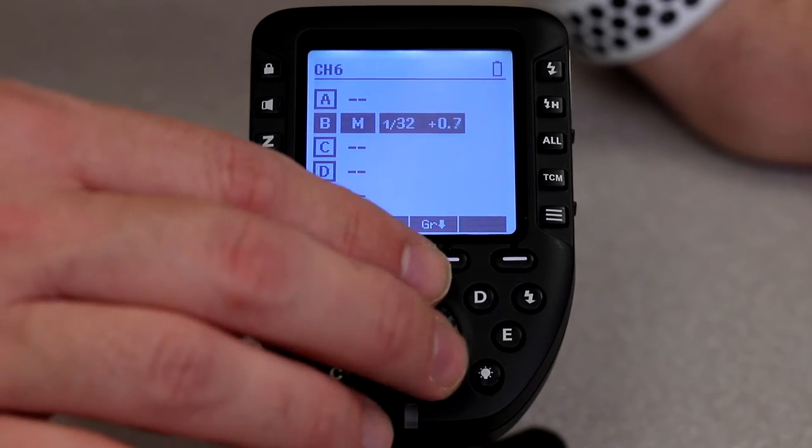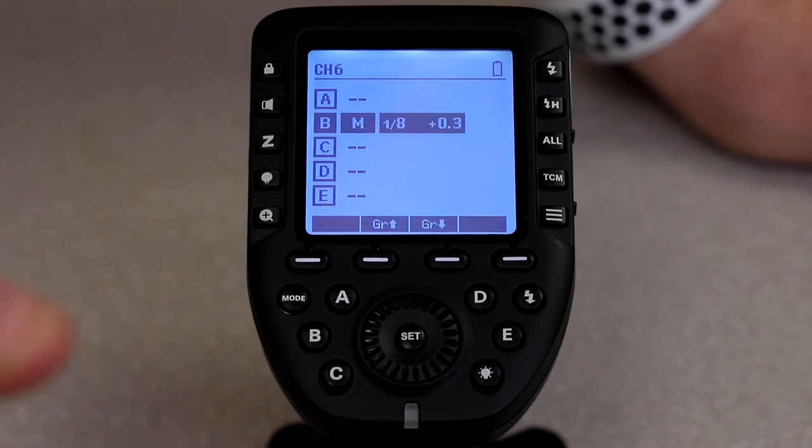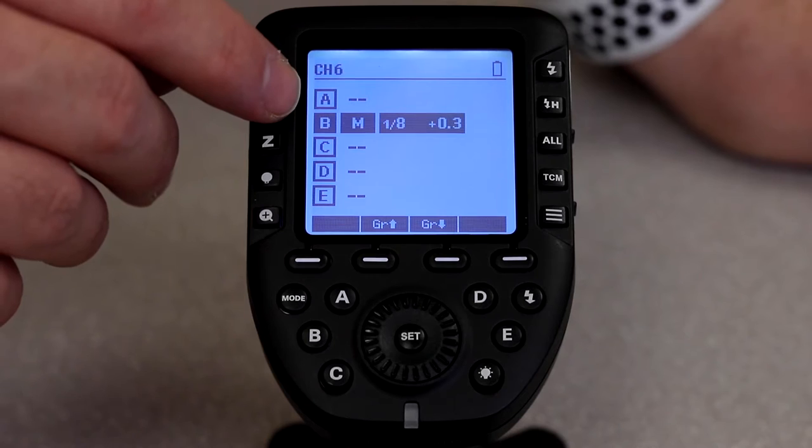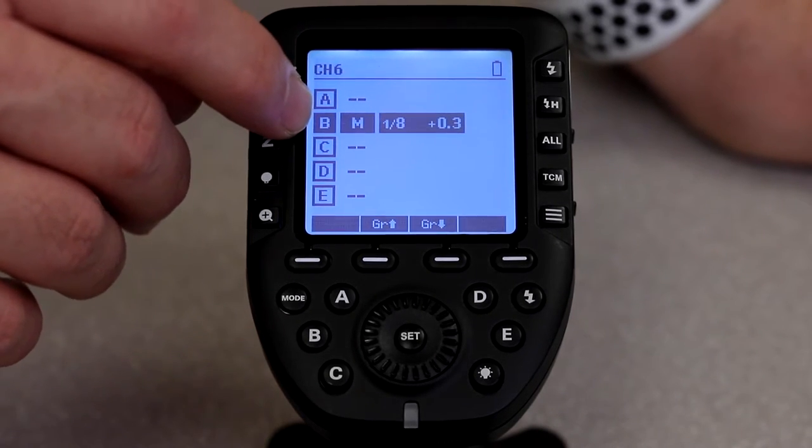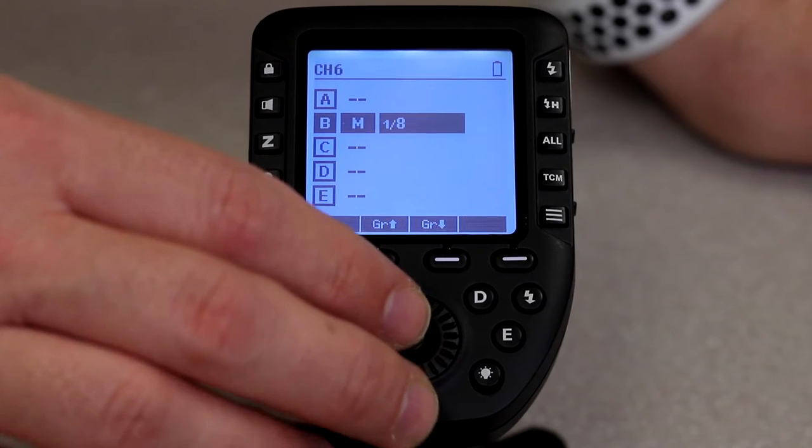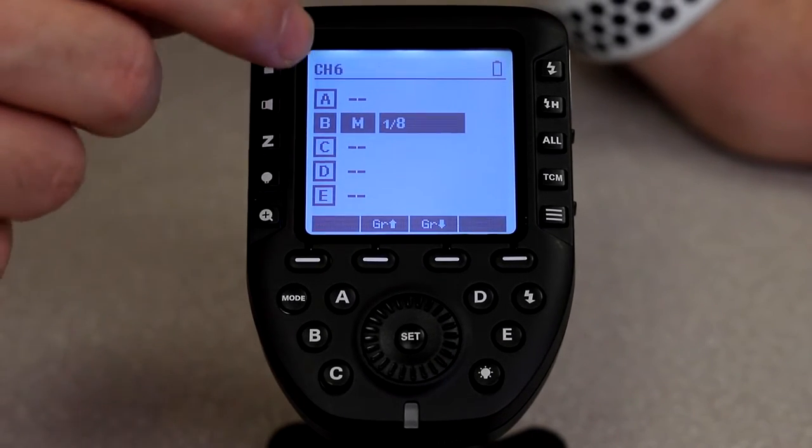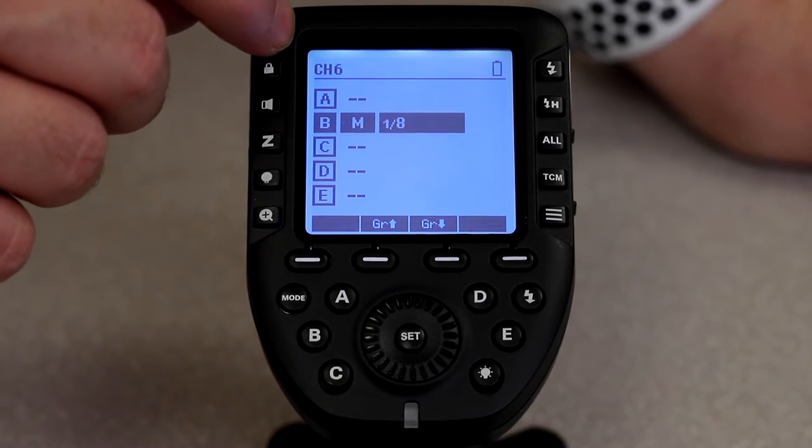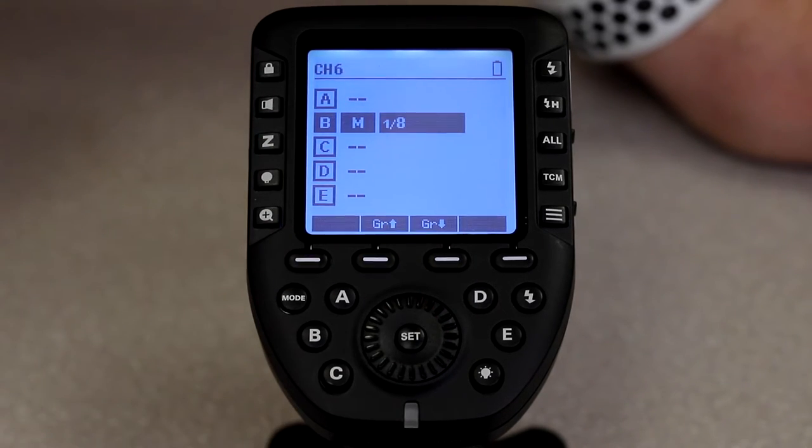So now let's just say that you have two lights set up. You've got a main light that's on group A and you have a hair light that's on group B, for instance. So now what you want to do is you want to have both of those active. Both of your lights need to be on channel 6 so that when you take the picture, this sends a signal to both of them to pop.